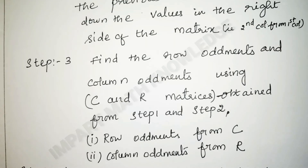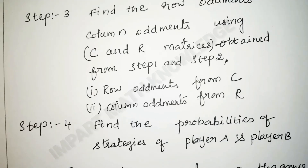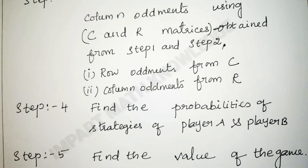Step 3: we have to find the row oddments and column oddments — row oddments from the column matrix and column oddments from the row matrix. After that, we find the probabilities of strategies of player A and player B. Finally, we find the value of the game.